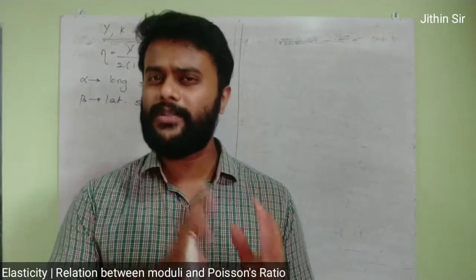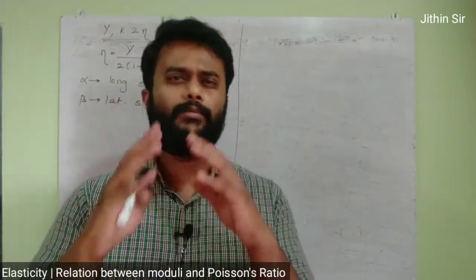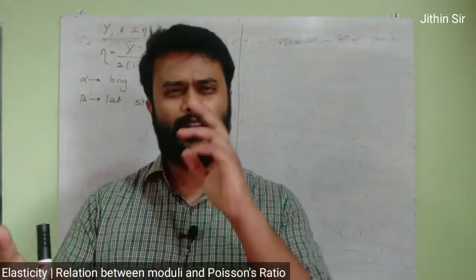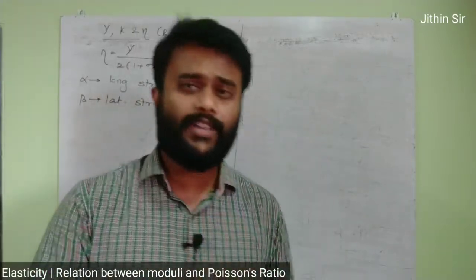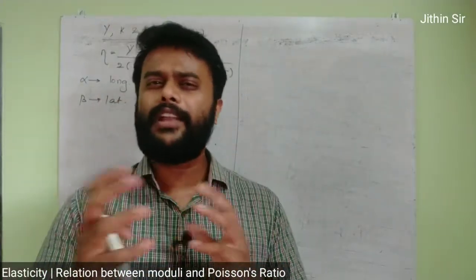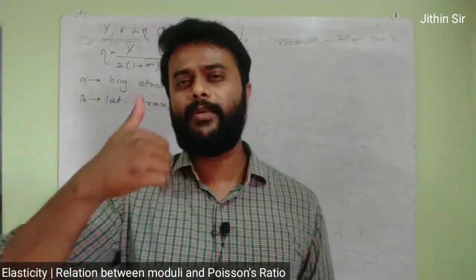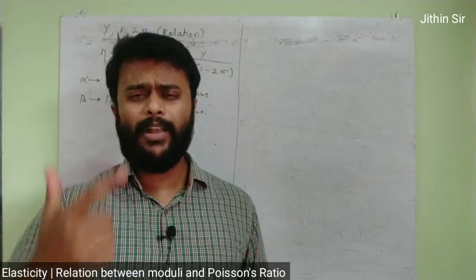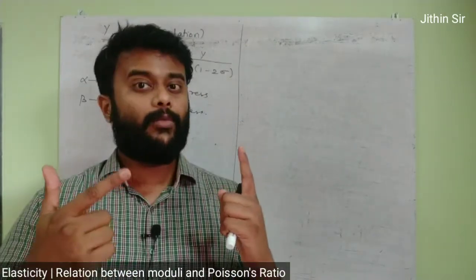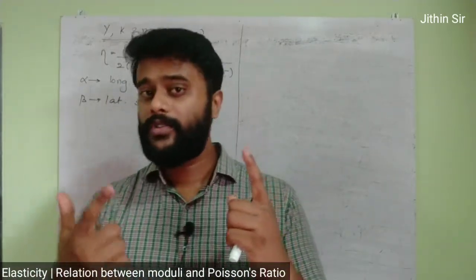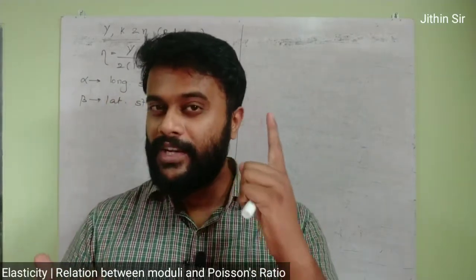Here we have learned Young's modulus, bulk modulus, modulus of rigidity (y, k, eta) and Poisson's ratio. We are slowly deriving their relations. We have already derived the relation between Young's modulus, bulk modulus and Poisson's ratio, then Young's modulus, modulus of rigidity and Poisson's ratio. We have always included Poisson's ratio,